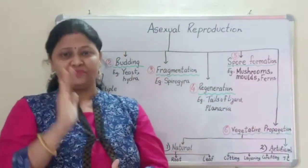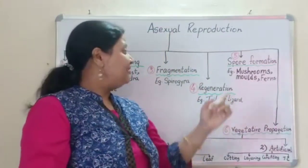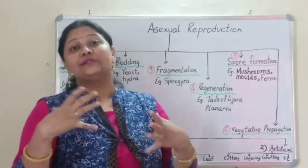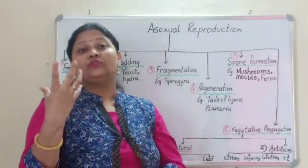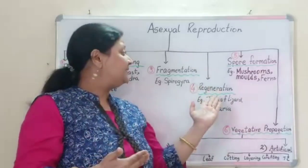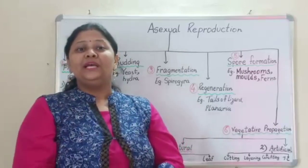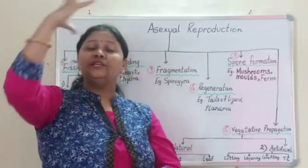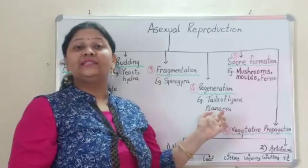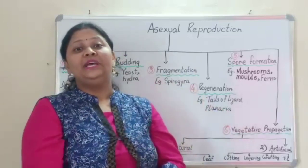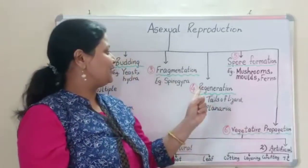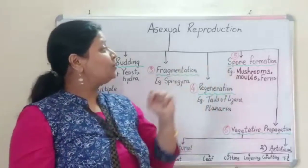Now coming to regeneration. When we talk about regeneration in an organism — if there is damage and loss of a limb or any part of the body, that part can regrow. An example is the tail of a lizard. But in some organisms, a part of the body can regenerate into a full organism. For example, planaria — the regenerative power in this organism is so powerful that a part can develop into a whole organism.